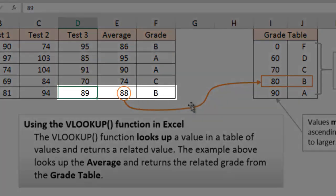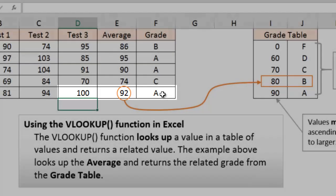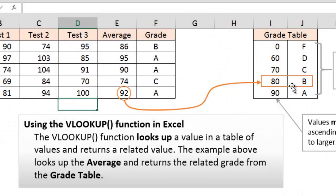I'll go ahead and change this one. Let's put a 100 in there for that student's test three. And that changed to a 92. The student gets an A of course.